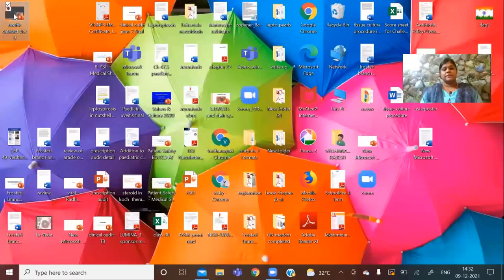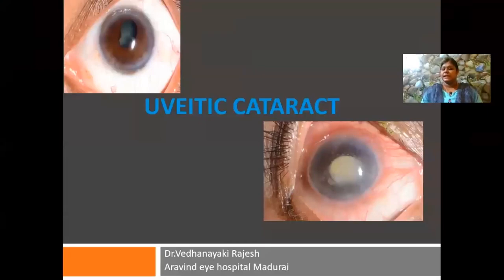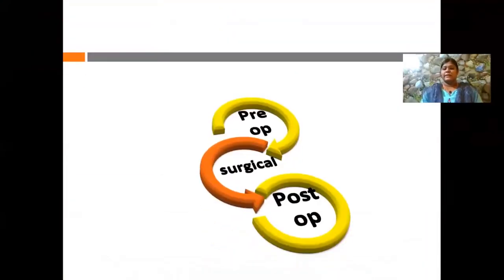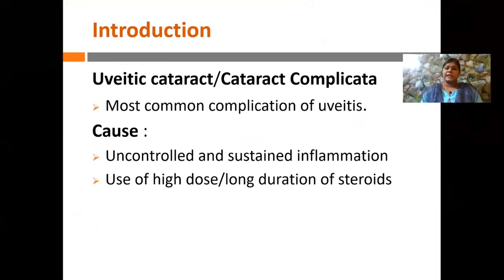Thank you to KOS and the uveitis group for this opportunity. My topic is uveitic cataract management. The moment a surgeon looks at uveitic cataract the first thing that comes to mind is a surgically demanding procedure — demanding not only in the intraoperative period but also in the pre- and post-operative period. Unless due diligence is given to control of inflammation in the pre-operative period, even in surgically good hands the post-operative period can be very disastrous. Uveitic cataract is one of the common complications of uveitis, caused either by uncontrolled inflammation or high-dose long-duration steroids.